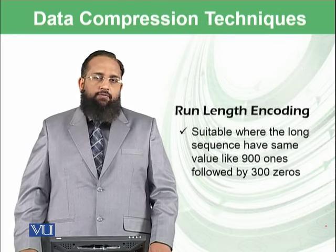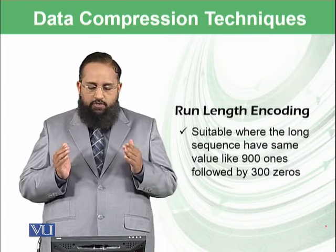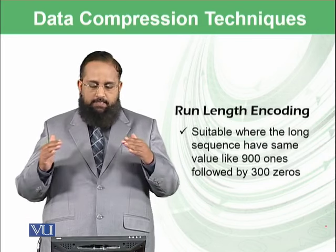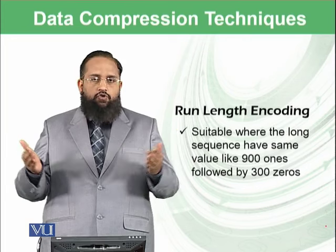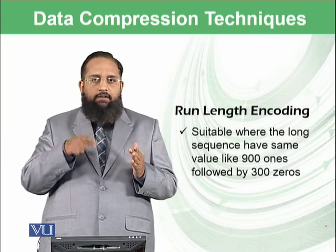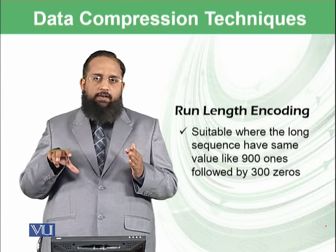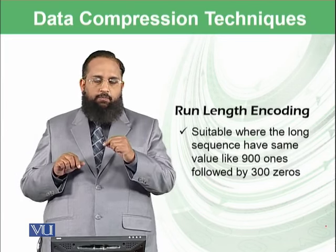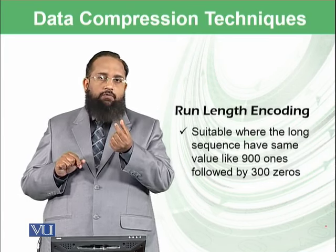There is another kind of technique known as run-length encoding. These are suitable where a long sequence has the same values — like 900 ones followed by 300 zeros. Instead of storing 900 ones and then 300 zeros, we can just say that this data has 900 ones and 300 zeros. Such information can be stored within a very small amount of space.